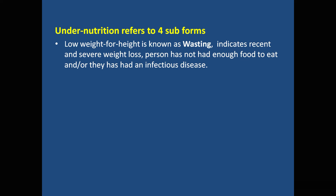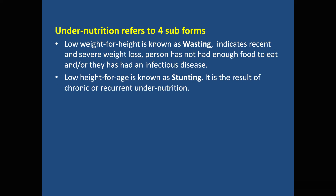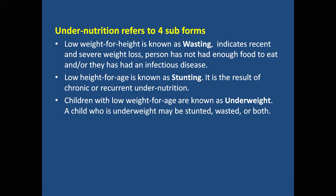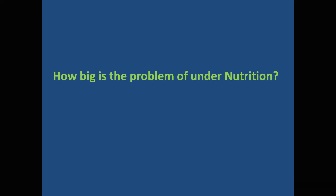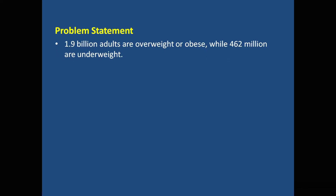As far as under-nutrition is concerned, there are four primary sub-forms. First is low weight for height — wasting — which usually indicates recent and severe weight loss where a person has not had enough food to eat. Second is low height for age due to chronic under-nutrition, referred to as stunting. Third is low weight for age, called underweight. Sometimes a child may have a combination — stunted, wasted, or both — along with deficiency of micronutrients.